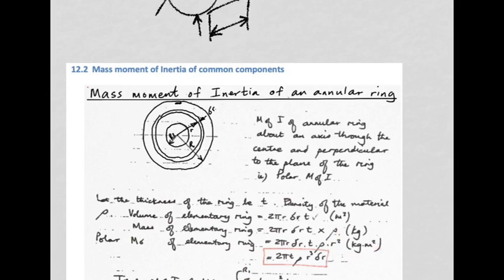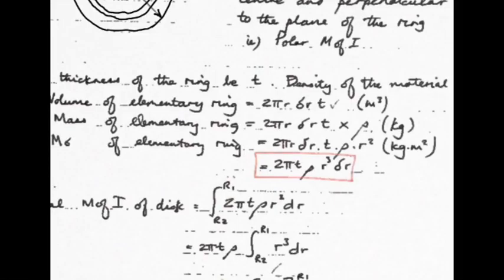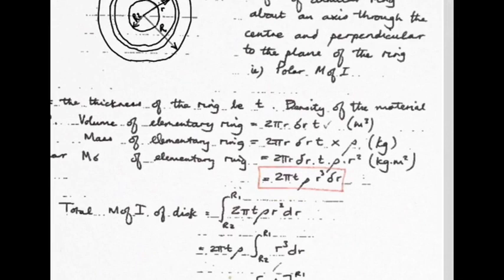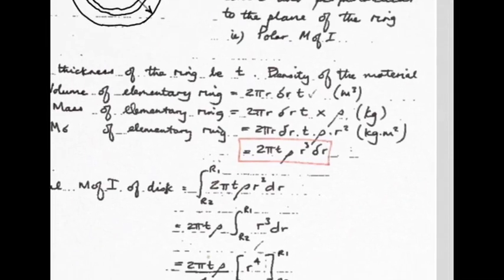Each elementary ring has mass moment of inertia 2π·t·ρ·r³·delta-r. Integrating to sum all the rings, the total mass moment of inertia is the integral of 2π·t·ρ·r³ dr. Moving constants outside the integral and leaving r³ as the variable, with limits r1 and r2, integrating r³ gives r⁴/4. The 4 moves with the constants, leaving r⁴ inside the bracket evaluated at the limits.